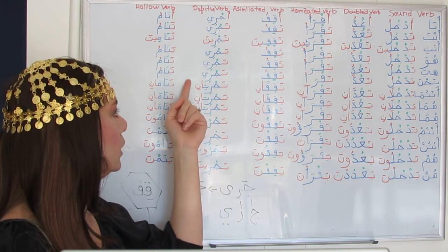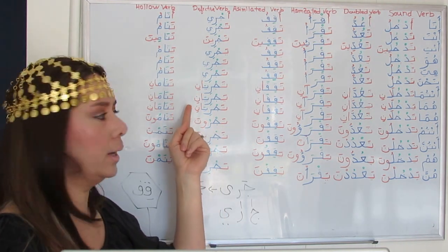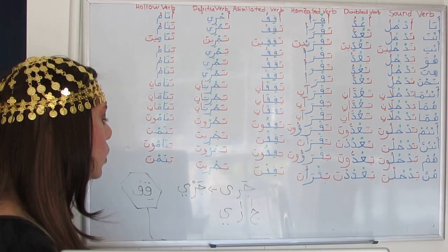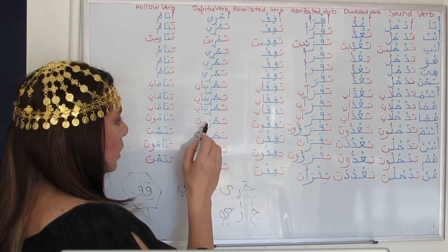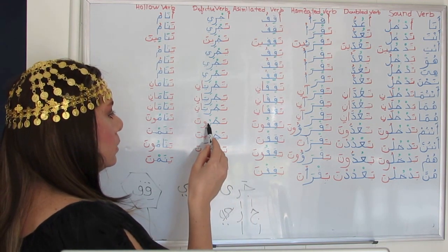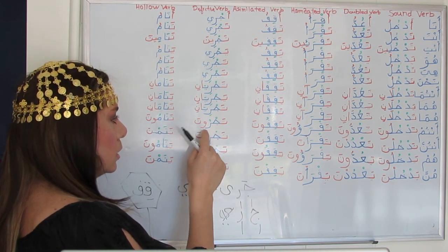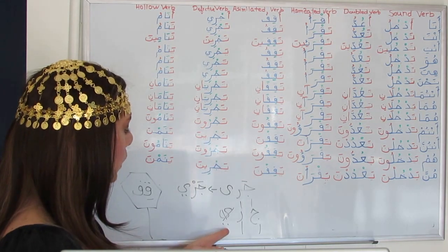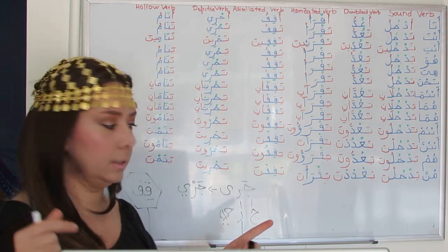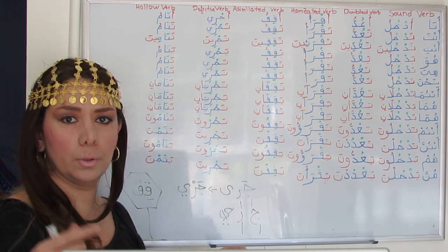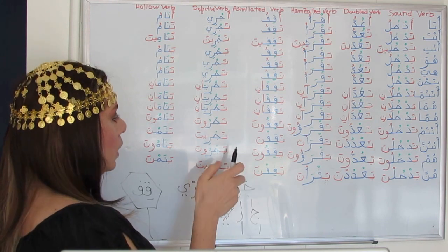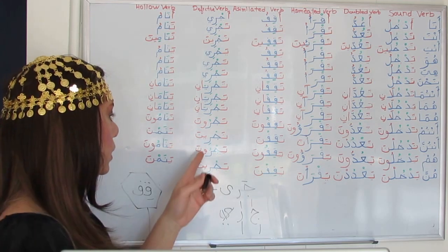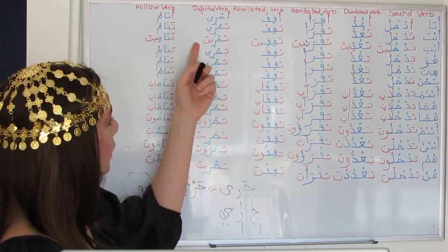Huwa yajri. Hiya tajri. Nahnu najri. Antuma tajriyani. Huma yajriyani. Huma tajriyani. Antum tajruona — here we drop the Ya because the suffix is Waw-Nun; we work only with Jeem and Ra, and add Dhamma before the Waw suffix since Ya and Waw won't work together. Antunna tajrina — here we keep the Ya since it matches the Kasra.